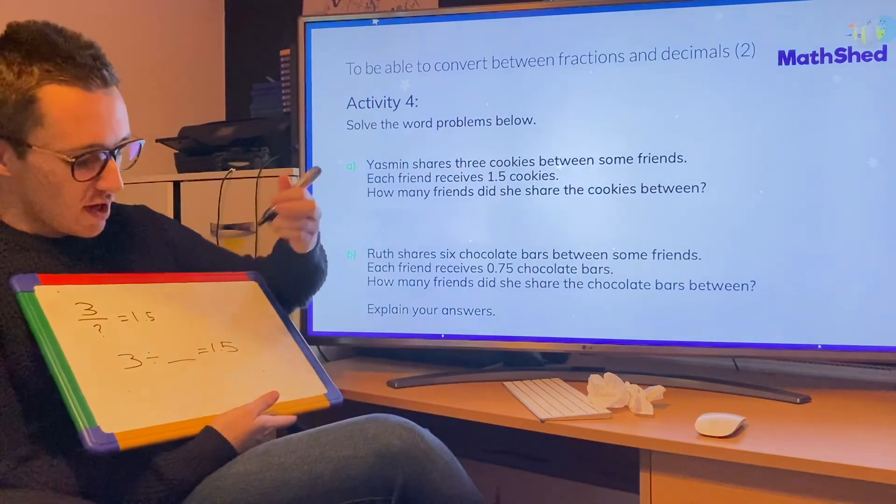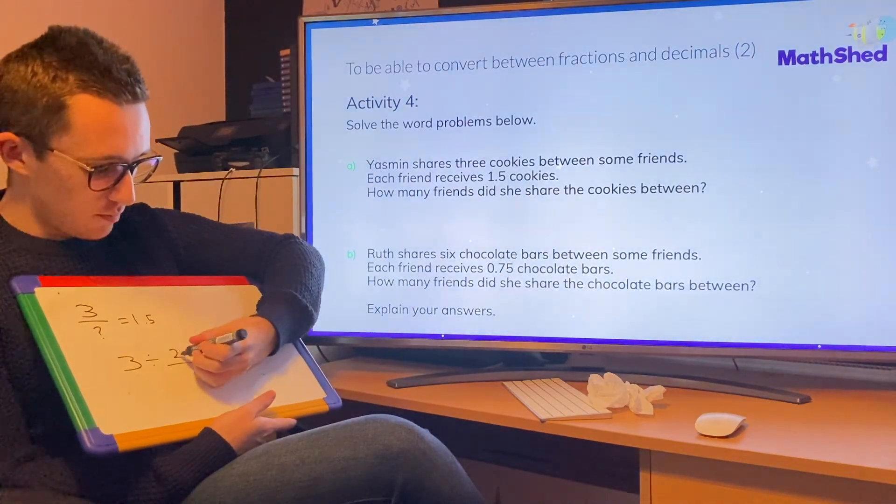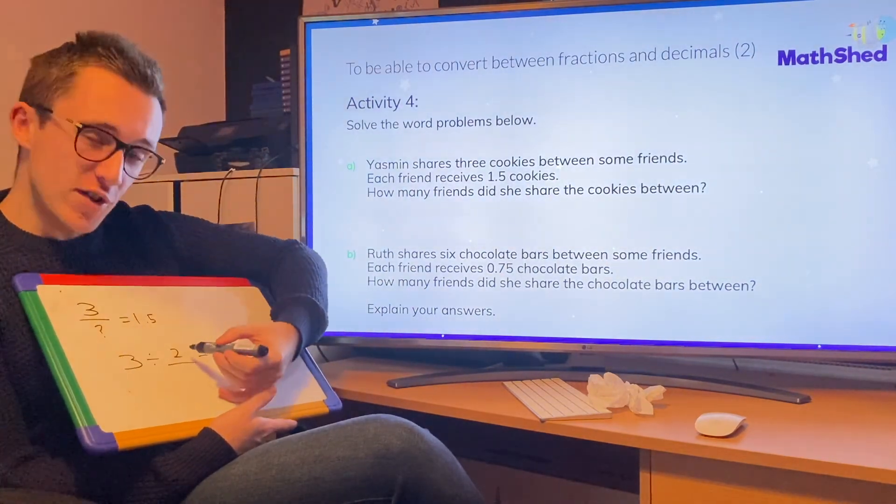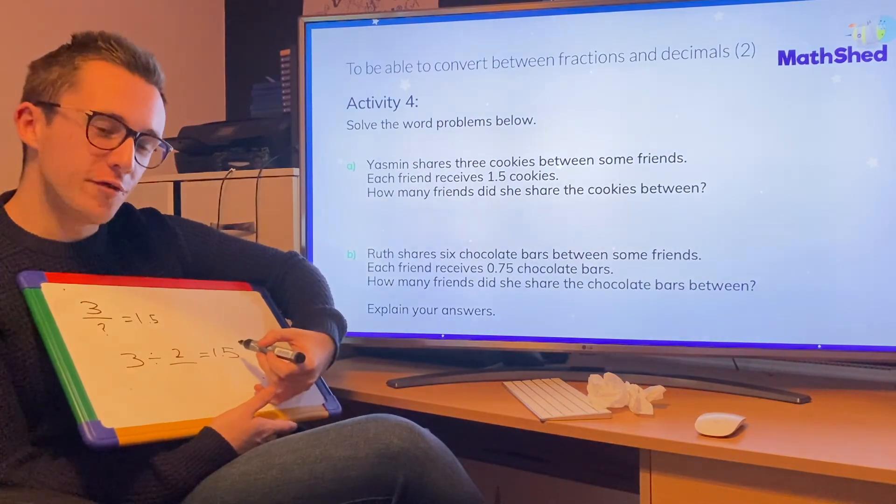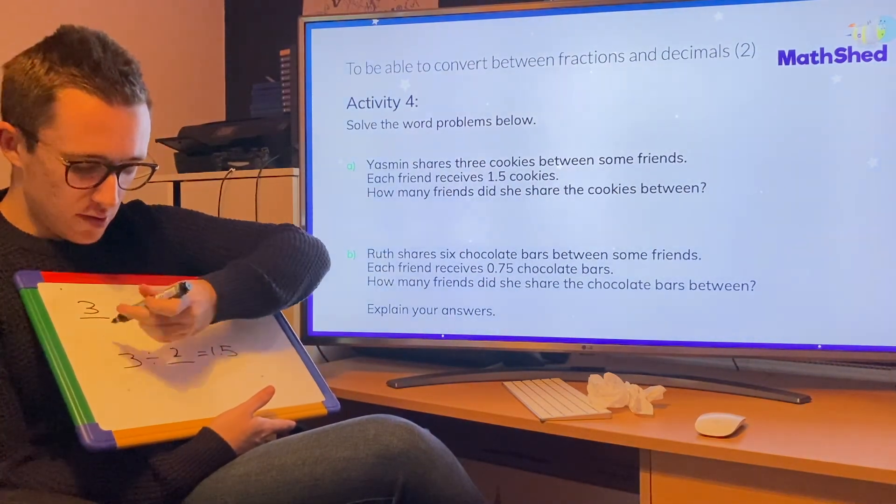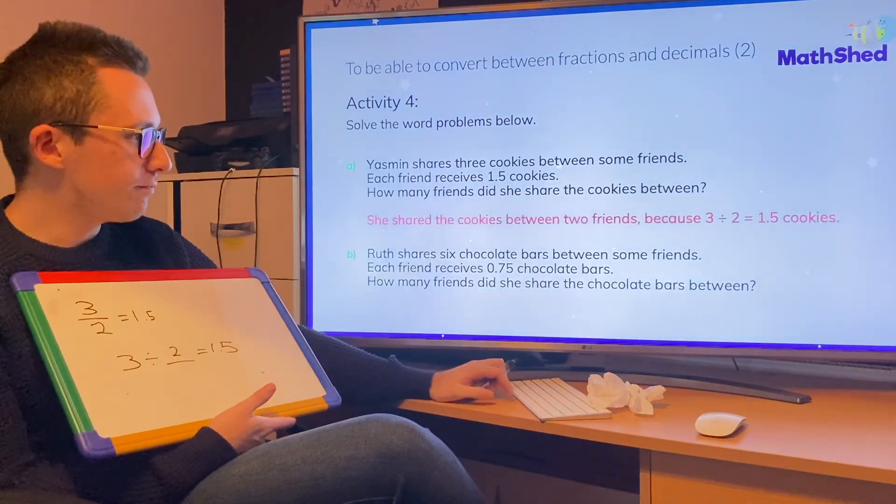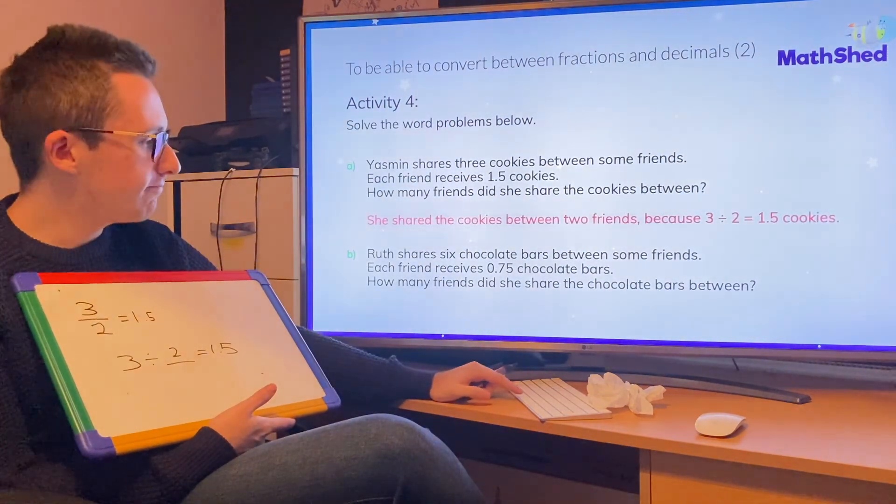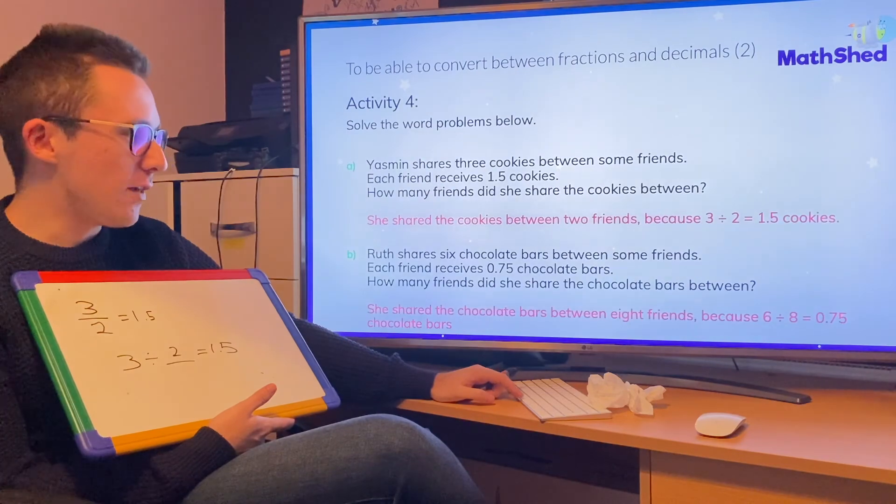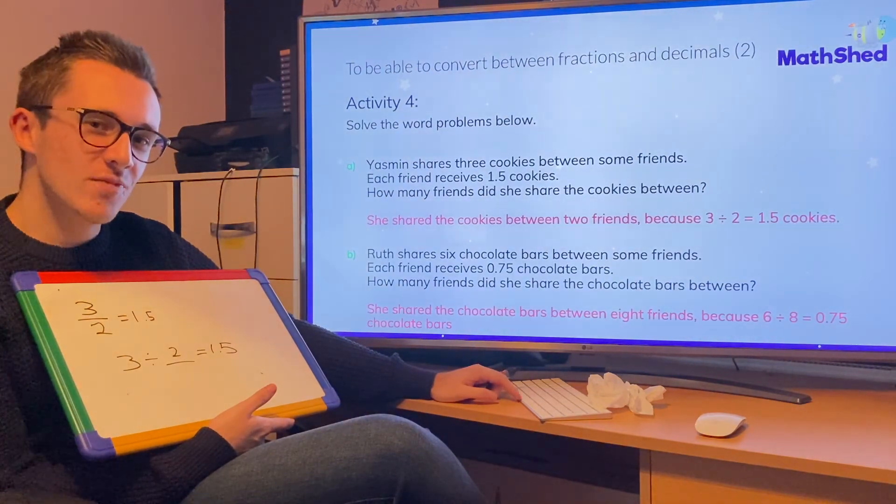Okay, so you should have had two, because three divided by two is one and a half. So therefore, my missing denominator is two, which can be seen here. And then there's the bottom one.